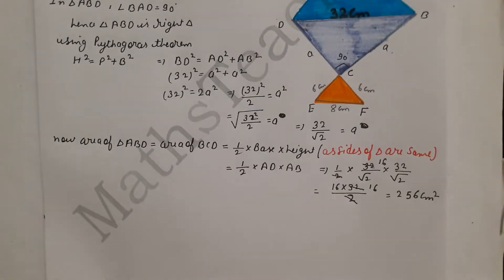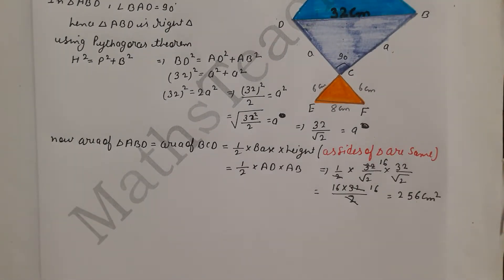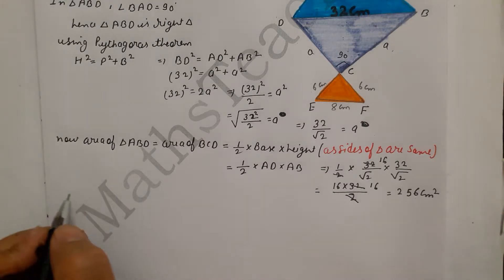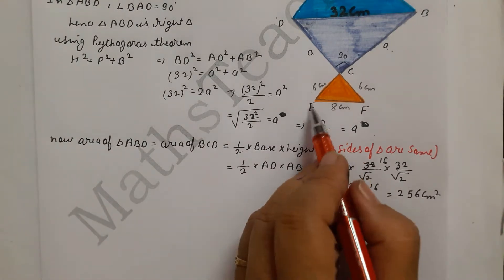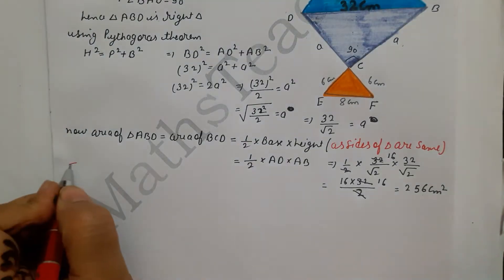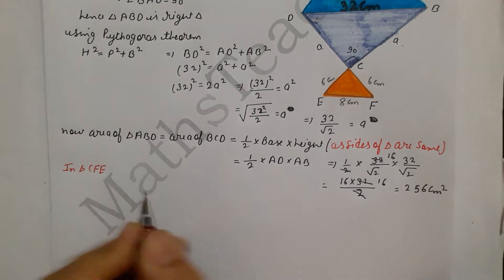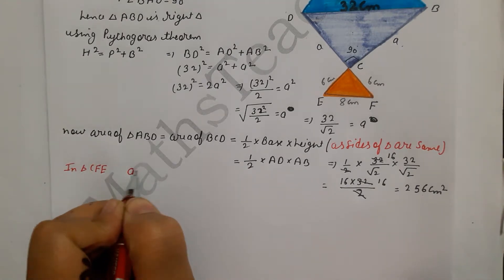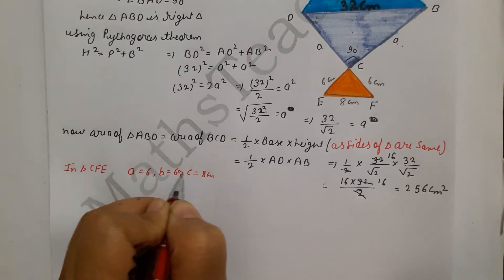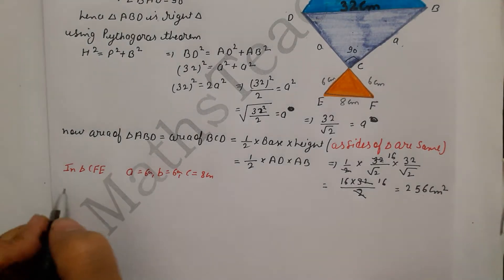Now for triangle CEF — the isosceles triangle — we use Heron's formula. Let a = 6 cm, b = 6 cm, and c = 8 cm. Area of triangle CEF = √(s(s−a)(s−b)(s−c)).